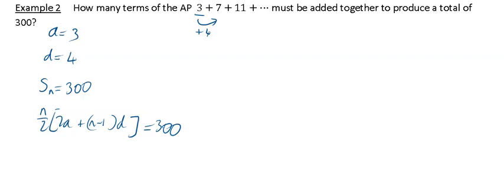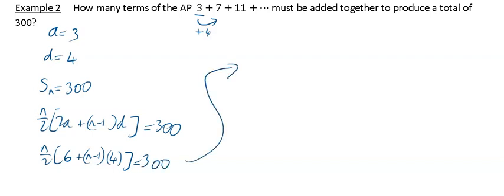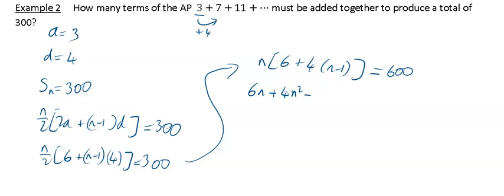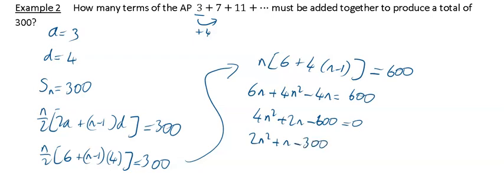Multiplying across by 2: N(6 + 4(N − 1)) = 600. Expanding: 6N + 4N² − 4N = 600, so 4N² + 2N − 600 = 0. Dividing everything by 2 gives 2N² + N − 300 = 0.